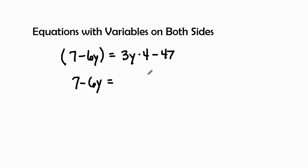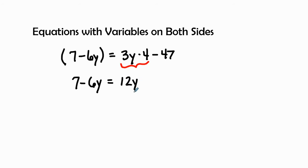On the right hand side we have 3y times 4 minus 47. Multiplication comes always first before subtraction, so we have to multiply 3y times 4 rather than 4 minus 47. So 3y times 4 is 12y, and then we bring down our negative 47.